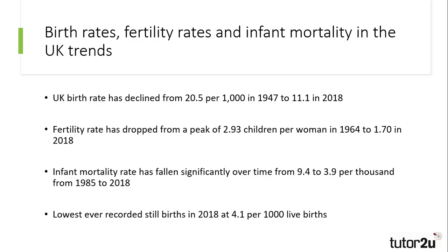Similarly, over time fertility has dropped from 2.93 children per woman in 1964 to 1.7 in 2018. Women are having a whole child less on average in the 21st century than in the 1960s. There has also been a decline in infant mortality, from 9.8 to 3.9 over the past 35 years, in no small part due to better knowledge of children's medicines and stillbirths being at their lowest ever recorded level. These last two statistics impact on the number of children being born, as the less tragic deaths of children there are, the less people are likely to have additional children.